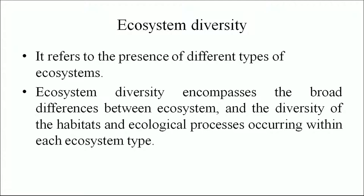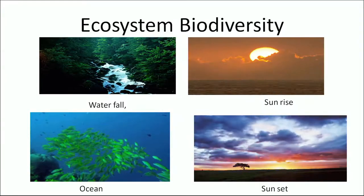Ecosystem diversity refers to the presence of different types of ecosystems. It encompasses the broad differences between ecosystems and the diversity of habitats and ecological processes occurring within each ecosystem type. For example, tropical South India with rich species diversity has an altogether different structure compared to the desert ecosystem, which has far fewer plants and animal species. The same differences can be observed in marine habitats — fresh water, sea or ocean. This diagram depicts ecosystem biodiversity.